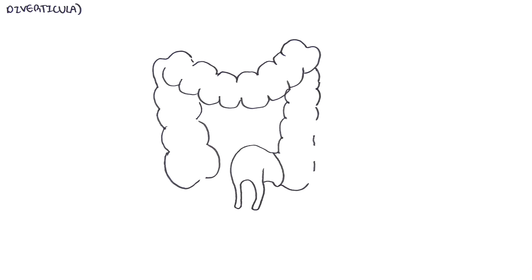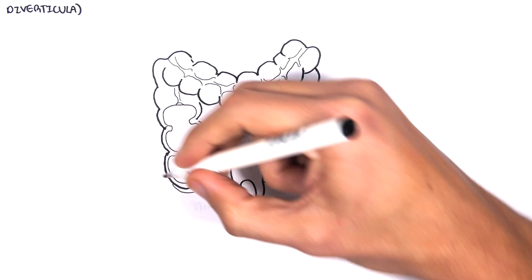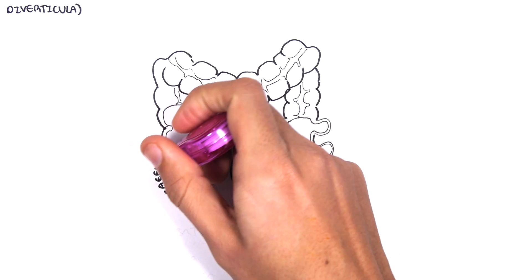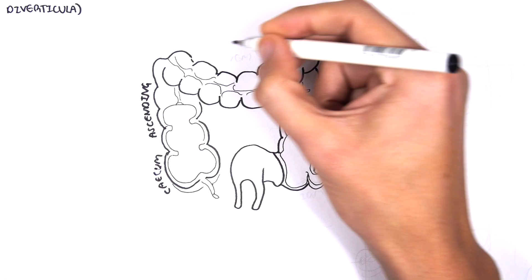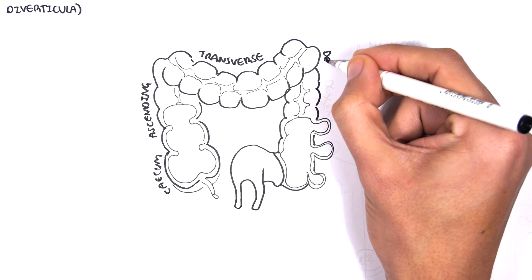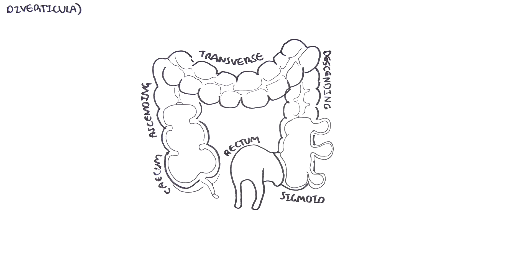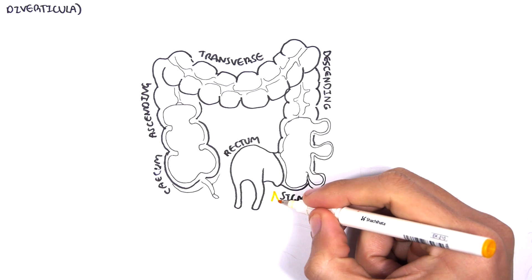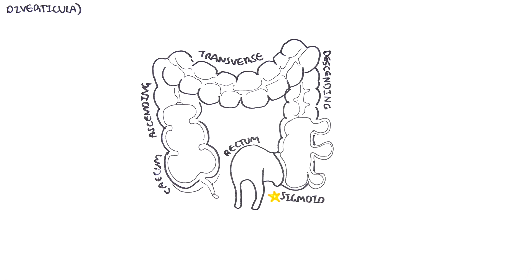Let's begin by recapping the anatomy of the colon. Here we have the cecum, the beginning of the colon, then the ascending, transverse, descending, sigmoid, and the rectum. It's important to note that the sigmoid is where most diverticula occur in western countries. However, in Asian populations this occurs more predominantly on the right side — around the ascending colon and the hepatic flexure slash transverse colon.